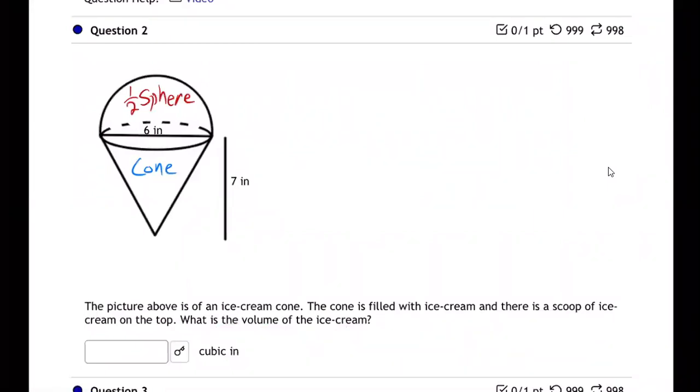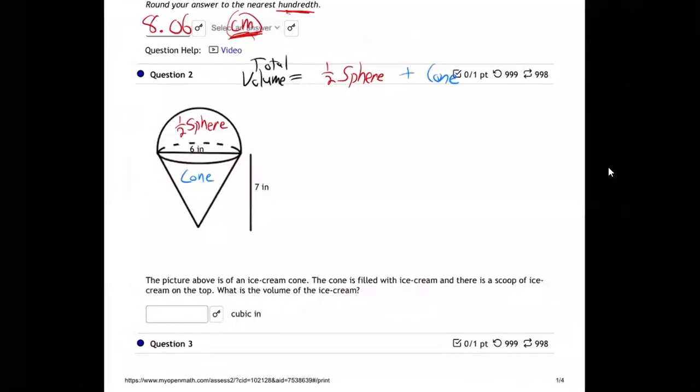So the total volume is going to equal the half a sphere plus the cone. So let's go grab those formulas.